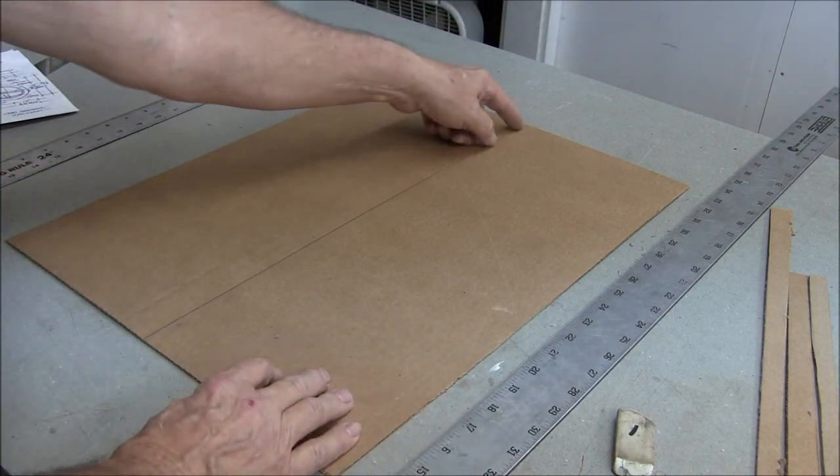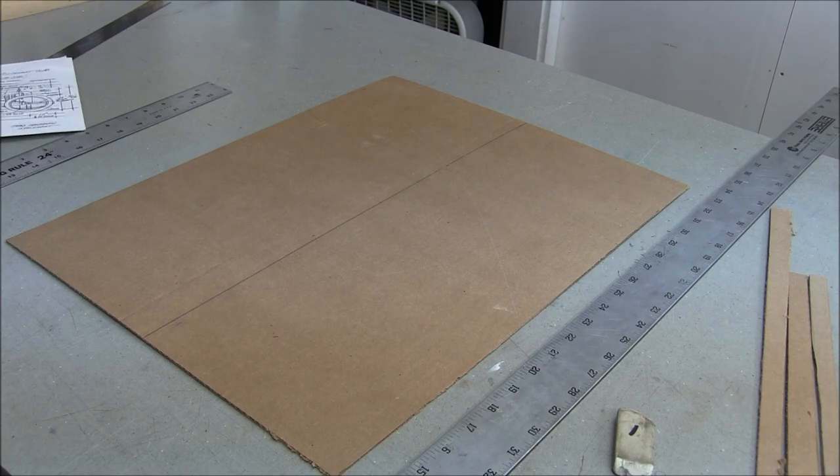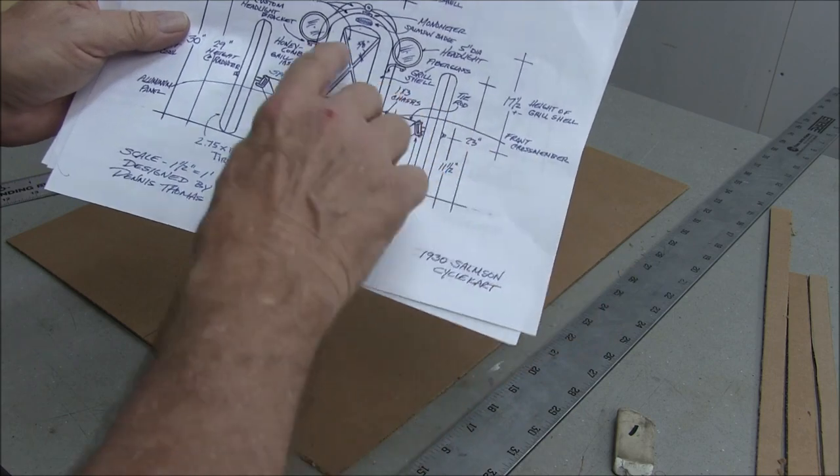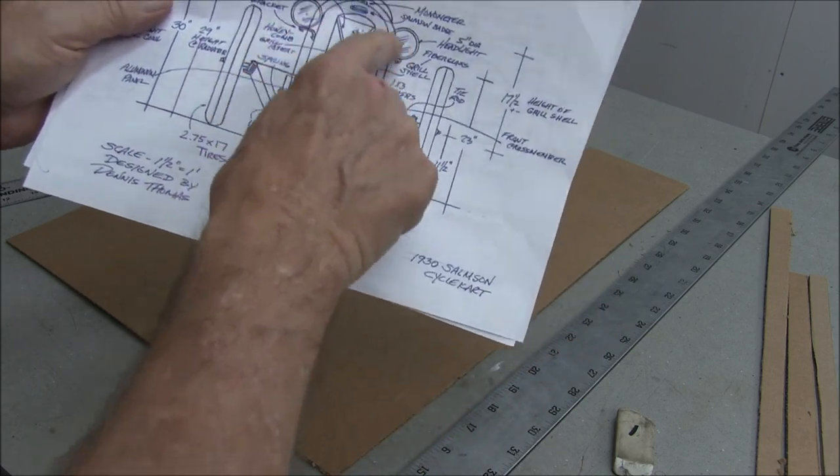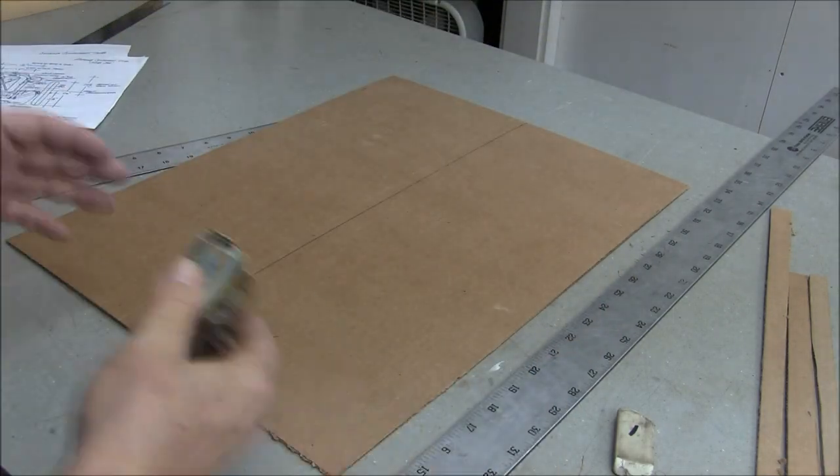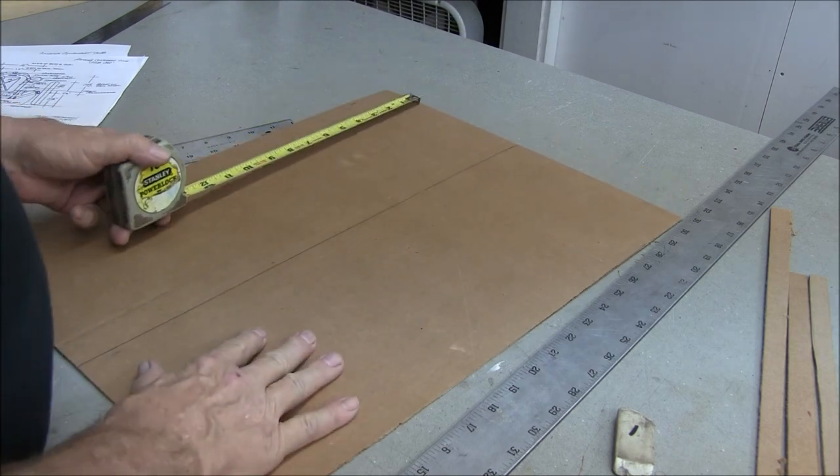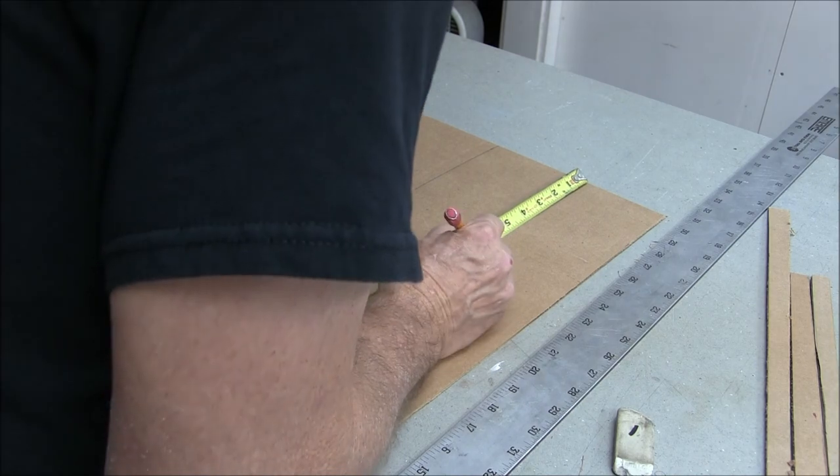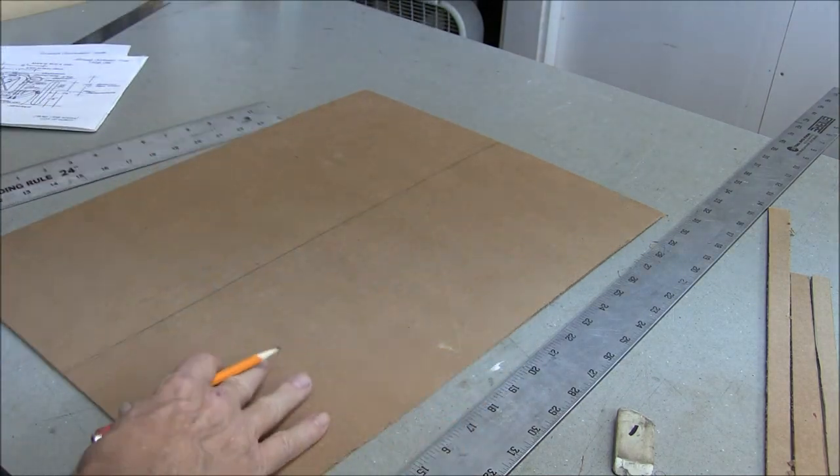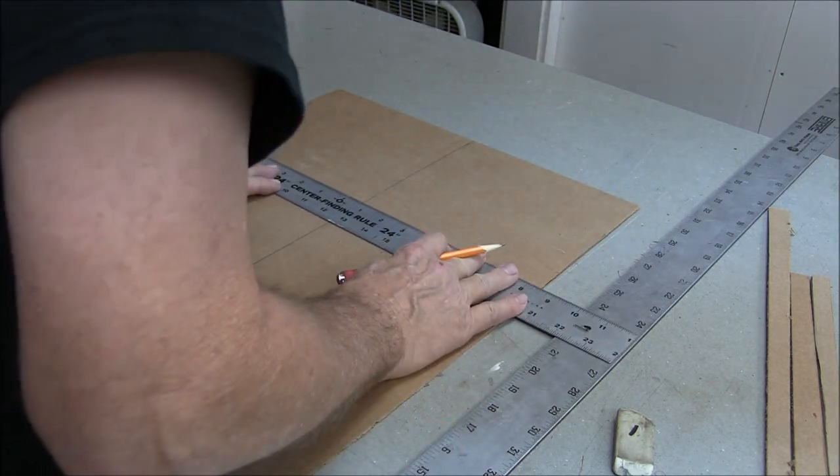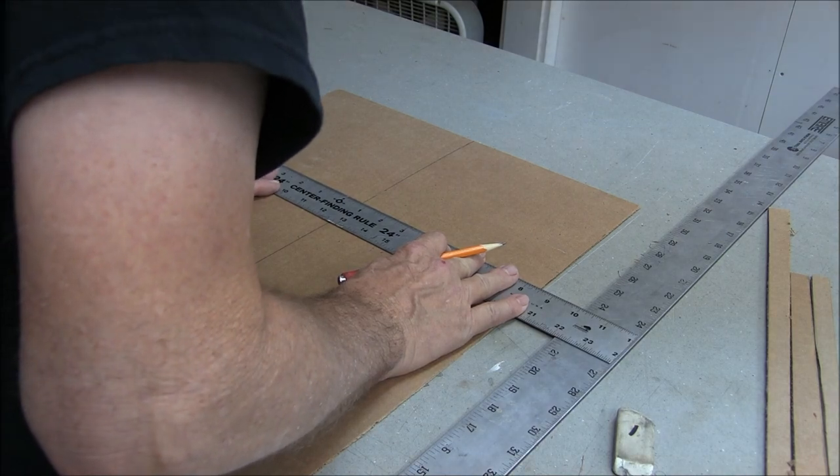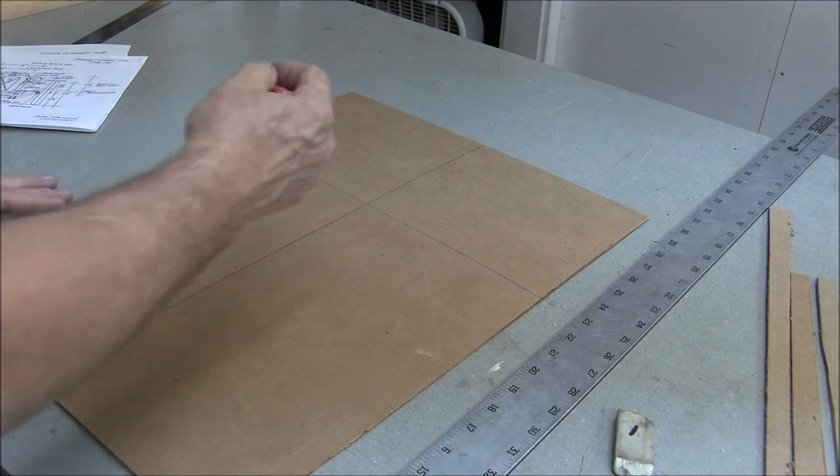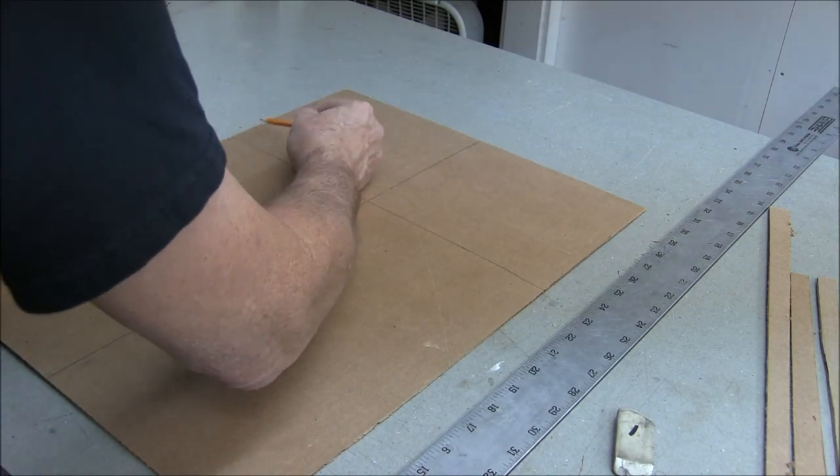I've split it down the middle with a line. I've determined that the radius, this radius here, starts at about seven inches down or so. Let's put a mark at seven, and a mark at seven. At this point in time, I'm going to draw one half of the arc.